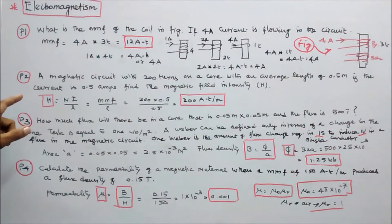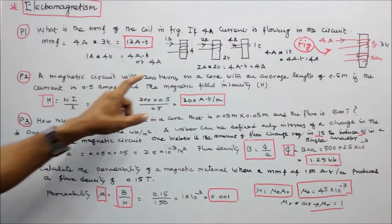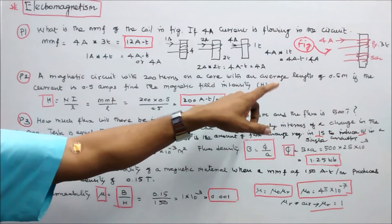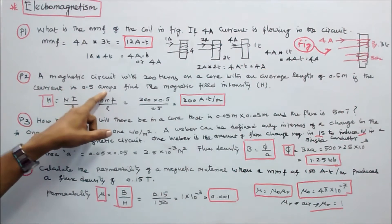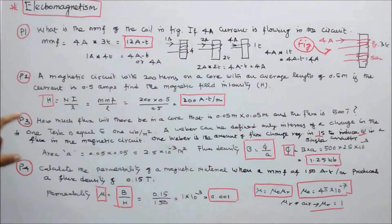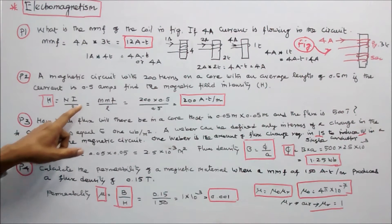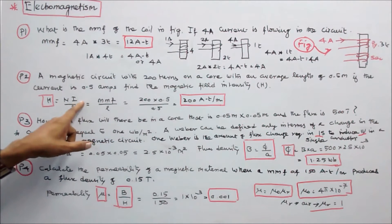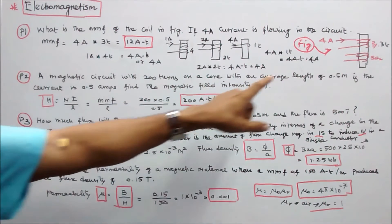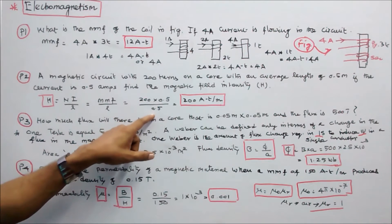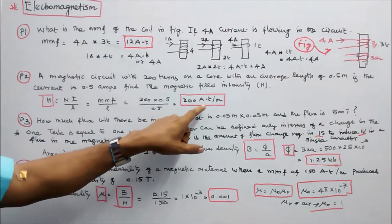Problem number 2. A magnetic circuit with 200 turns on a core with an average length of 0.5 meters. If the current is 0.5 amps, find the magnetic field intensity H. Magnetic field intensity H is equal to N into I divided by L, or MMF by L. Here N equals 200, I equals 0.5 amps, L equals 0.5 meters. 200 into 0.5 divided by 0.5 equals 200 ampere turns per meter.